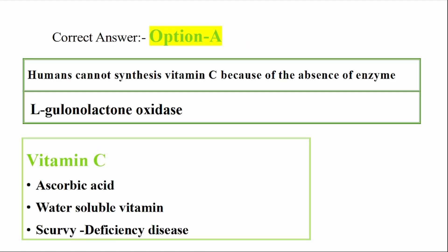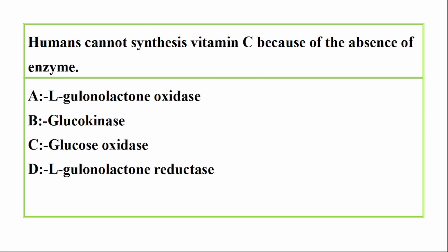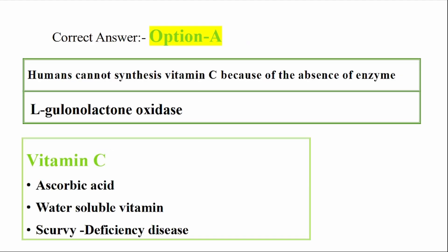Correct answer is Option A: L-gulonolactone oxidase. Humans cannot synthesize vitamin C because of the absence of the enzyme L-gulonolactone oxidase.